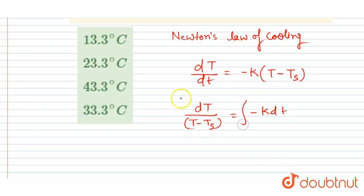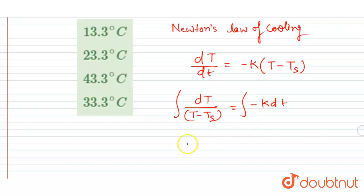So if you integrate this term, you will get ln. The limit will be initial to final, and zero to t, so here we can put the limit T initial